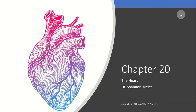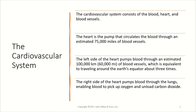Welcome to chapter 20 on the heart for A&P2. Today we really start covering a lot of the cardiovascular system, which is going to consist of blood, the heart, and various blood vessels. We've already talked about blood last time, so the heart is what we're focusing on today. It is essentially a pump that is going to circulate blood through an estimated 75,000 miles of blood vessels.